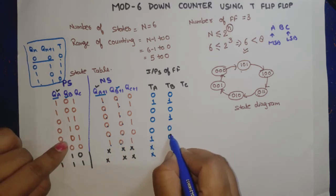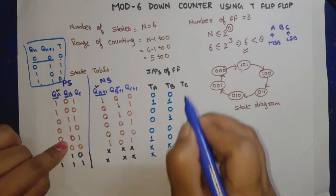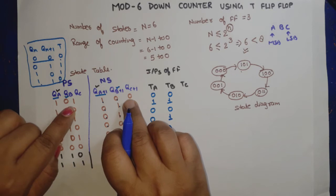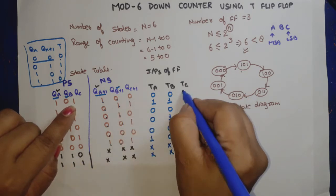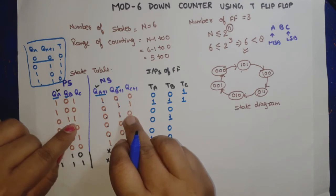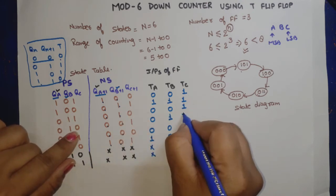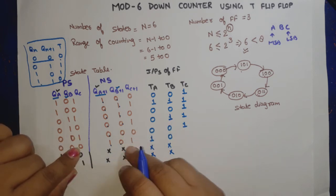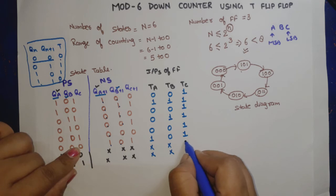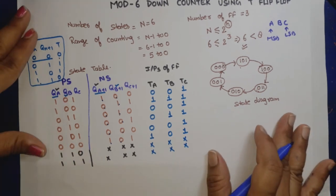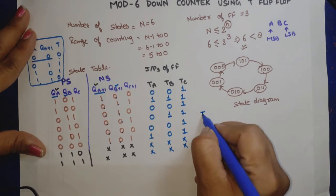For TC, comparing QC and QC+1: first state changes 1 to 0, so TC is 1. Then 0 to 1, so 1. Then 1 to 0, so 1. Then 0 to 1, so 1. Then 1 to 0, so 1. Here both are same (0 to 0), so 0. Then 0 to 1, so 1.